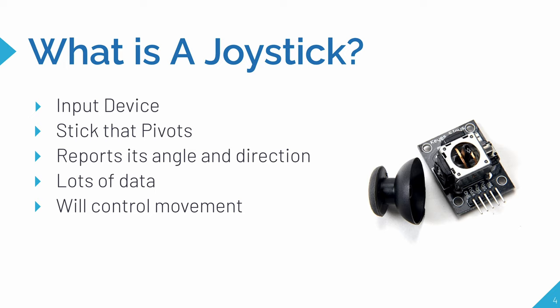Your finger can move this stick up, down, left, right, and it even has a button so you can press it also. It'll report the angle and direction to the Raspberry Pi, or in this case to our Python program. And because it's an input device, you can do all kinds of programs with it.